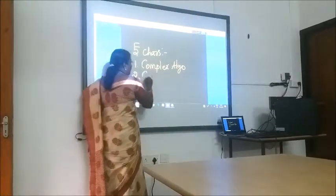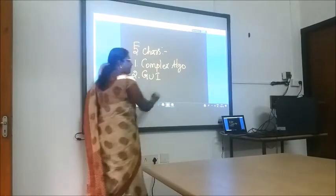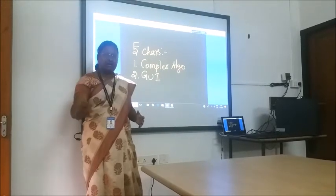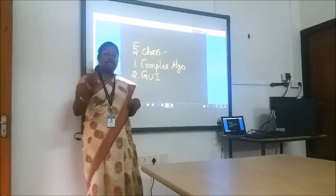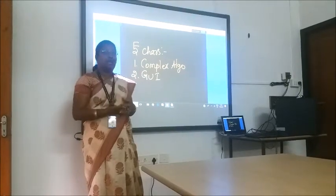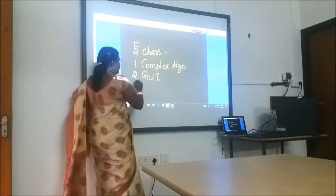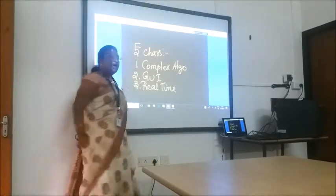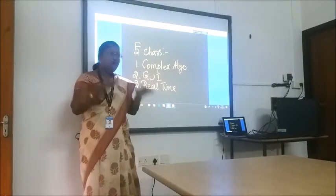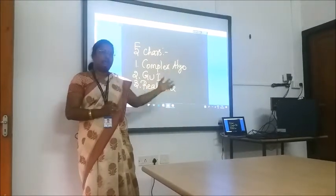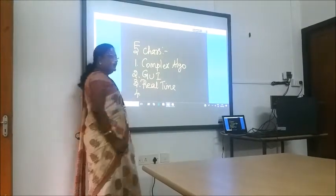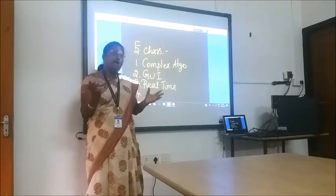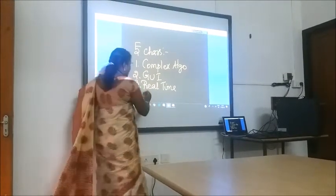Another characteristic is GUI — graphical user interface. It might be LEDs, it might be buttons, or user-friendly applications. Another important characteristic is real time — everything should work on time, not at a past-defined time. And another key characteristic is that any embedded system should be able to carry out many tasks at the same time: multitasking.